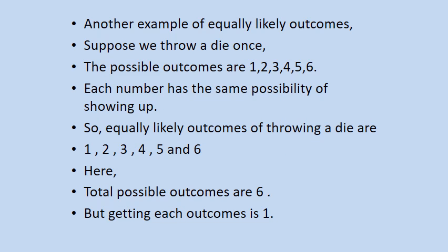Take another example. When we throw a die, the possible outcomes are — now you are aware about the die. Six faces are there and on each face the numbers are written as 1, 2, 3, 4, 5 and 6. So each number has the same possibility of showing up, meaning either 1, 2, 3, 4, 5 or 6 comes. But definitely any one of these 6 numbers will come, not all 6 at a time. So the equally likely outcomes of throwing a die are either 1, 2, 3, 4, 5 or 6.